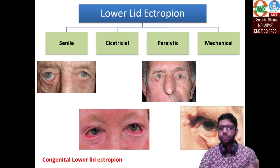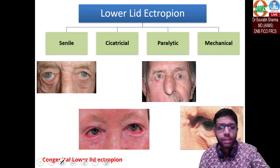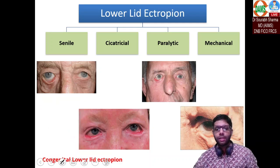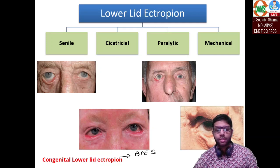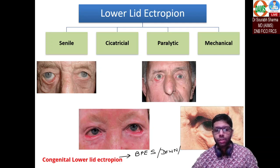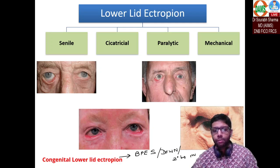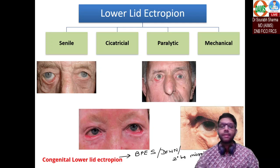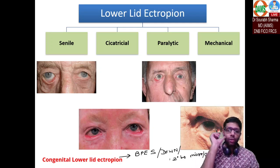Congenital ectropion is rare. It is associated with conditions like blepharophimosis epicanthus syndrome (BPES), Down syndrome, and small eyes secondary to microphthalmos or anophthalmos — when there is no support, the eyelid can come out. So congenital lower lid ectropion is rare.